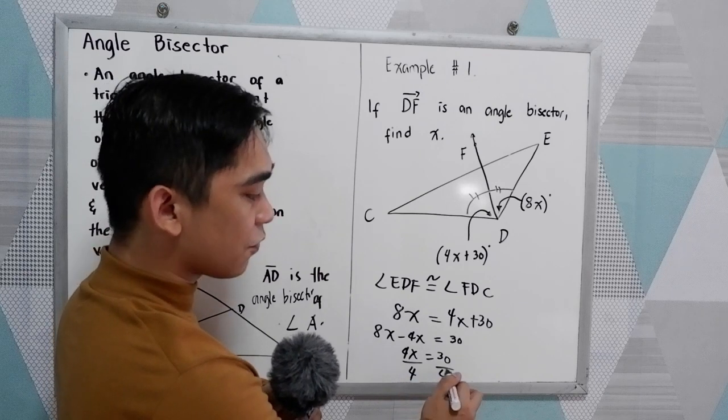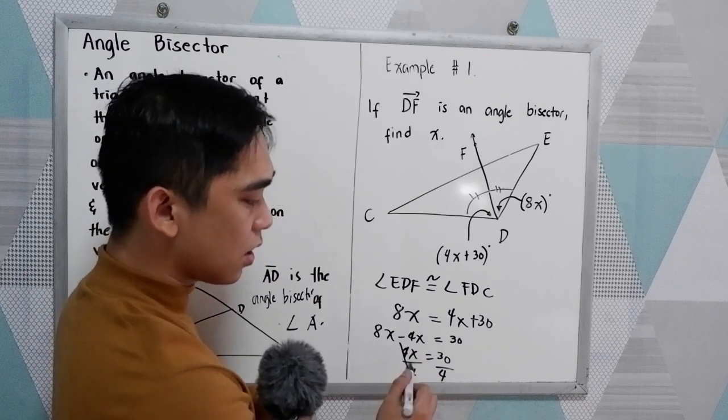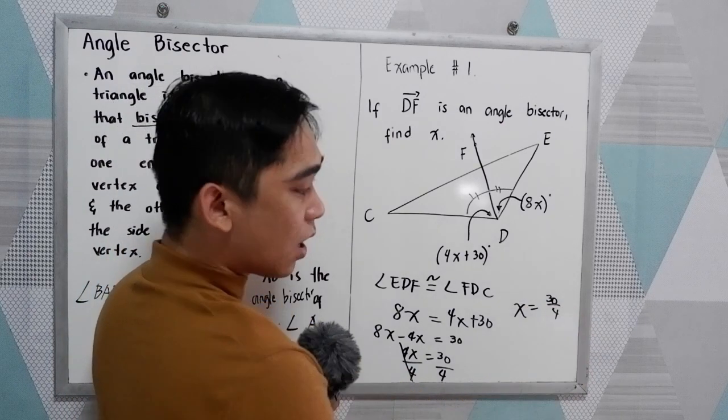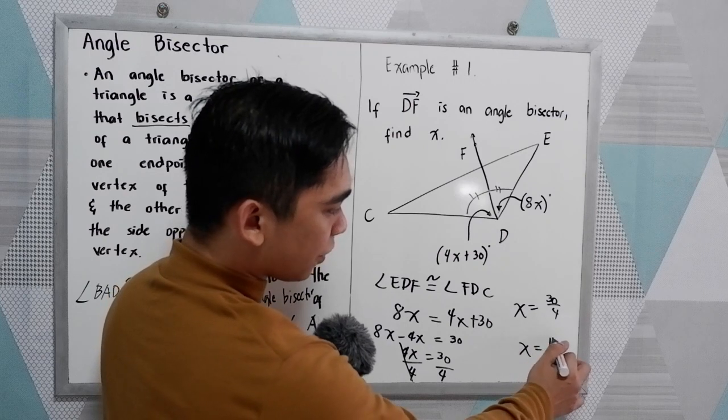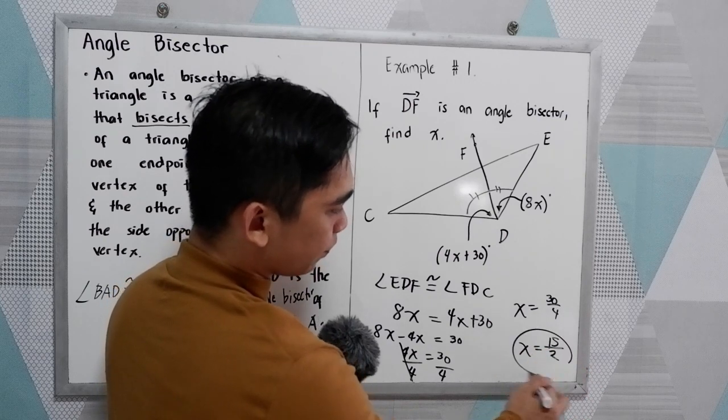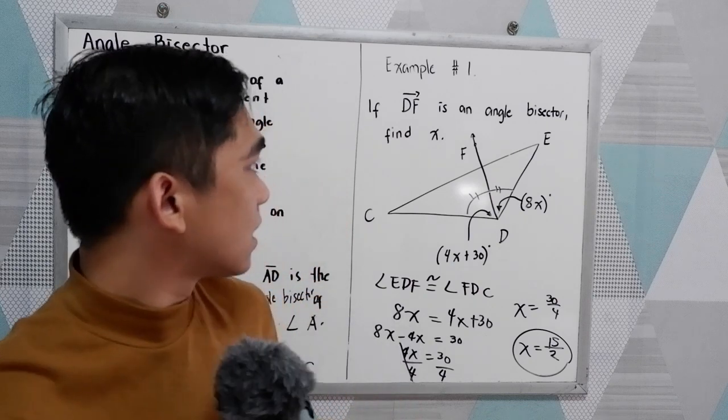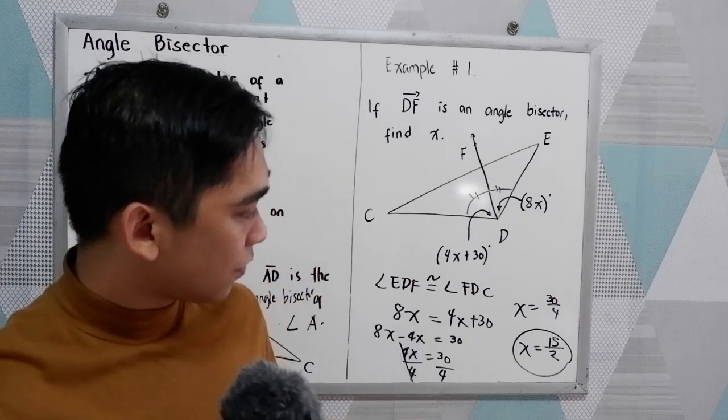Now to get the value of X, we need to divide by 4. So X is equal to 30 over 4. Reduce to lowest terms, X is equal to 15 over 2. That is the value of our X.